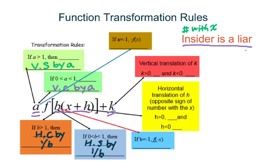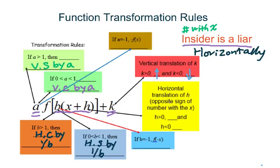For insiders, remember that the keyword is horizontally — it's horizontally moved left or right, or it's horizontally stretched or compressed. Therefore, for K, which is an outsider, greater than 0 means going up, and less than 0 means going down. But for H, greater than 0 means move to the left, and less than 0 means move to the right.